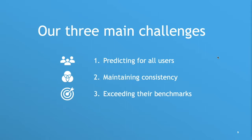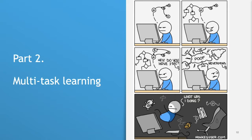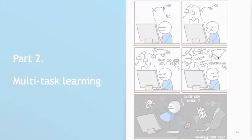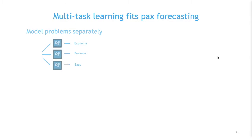Enter multitask learning. For humans, multitasking is not usually a good idea. For machine learning models, there are some indications that it might actually be beneficial. We have two ways of looking at these problems: we can model everything separately — for example, economy class, business class, and bags each get their own model outputting one number — or we can create one model that outputs three numbers at the same time. That's multitask learning.